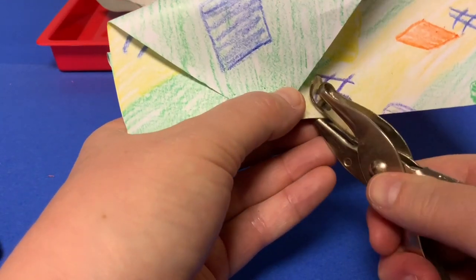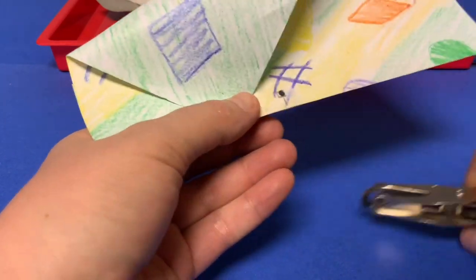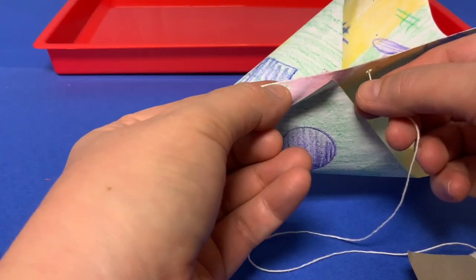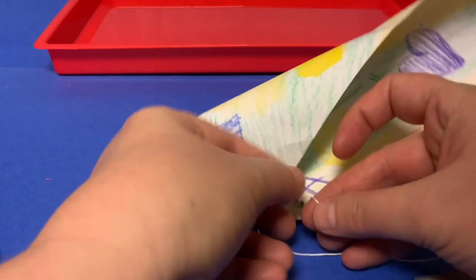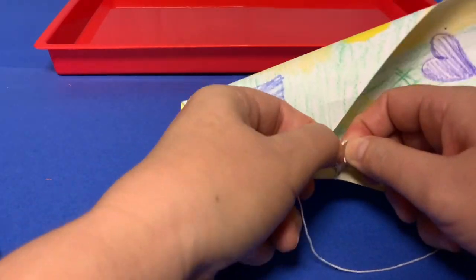Use a hole punch to make a hole. Put your string through the hole and tie a knot. Make sure that it's secure so your kite doesn't fly away.